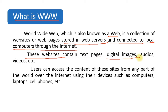Websites can also contain digital images, audios, videos, etc. Different users can access the contents of these websites from any part of the world over the internet using their devices like computers, laptops, cell phones, etc. So basically, the World Wide Web is a global information system where different multimedia files are made available to the user.